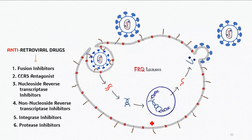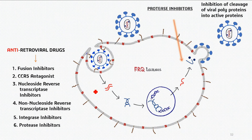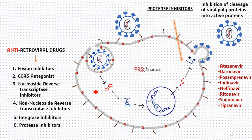Lastly, we have protease inhibitors. At this stage, the virus's proteases cleave long polyprotein chains into smaller functional proteins, which are then assembled with the genomic RNA to form the new virus. Certain drugs inhibit this cleavage so proteins cannot be converted into active forms. The most common protease inhibitors are darunavir, indinavir, and ritonavir, though you can see the full list in alphabetic order.